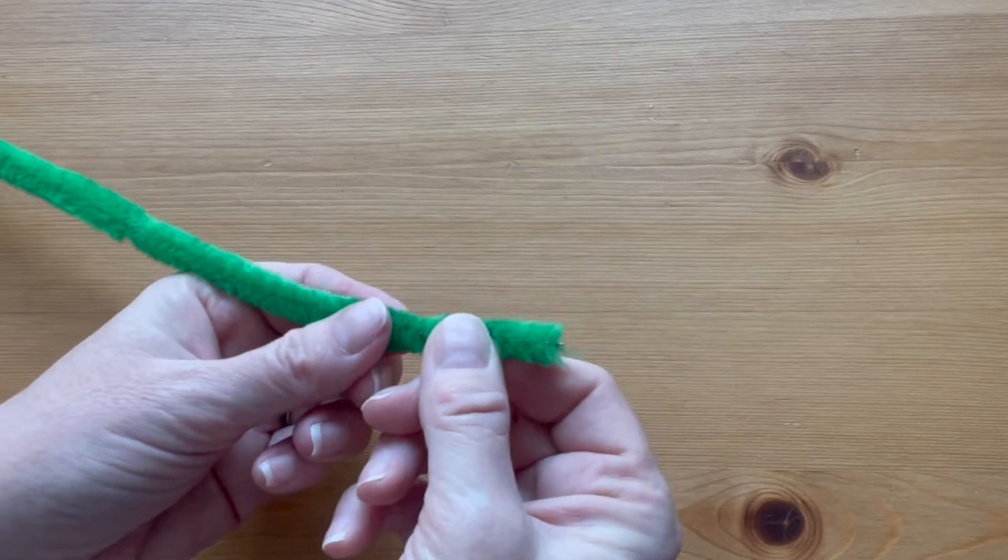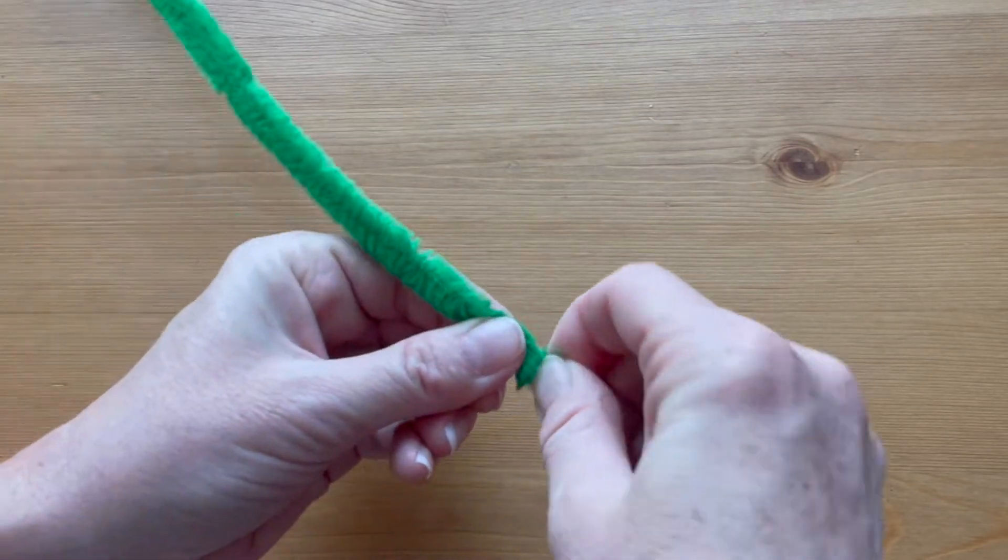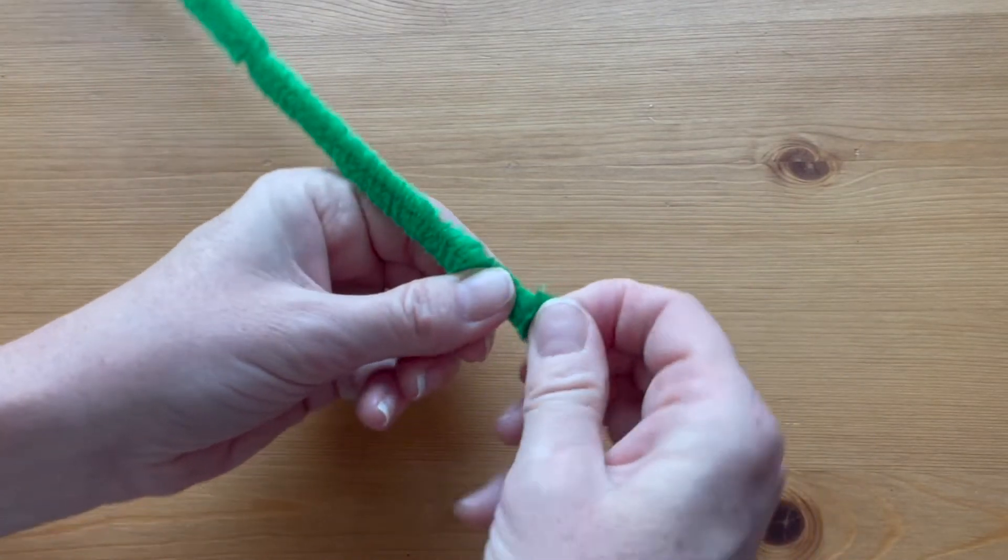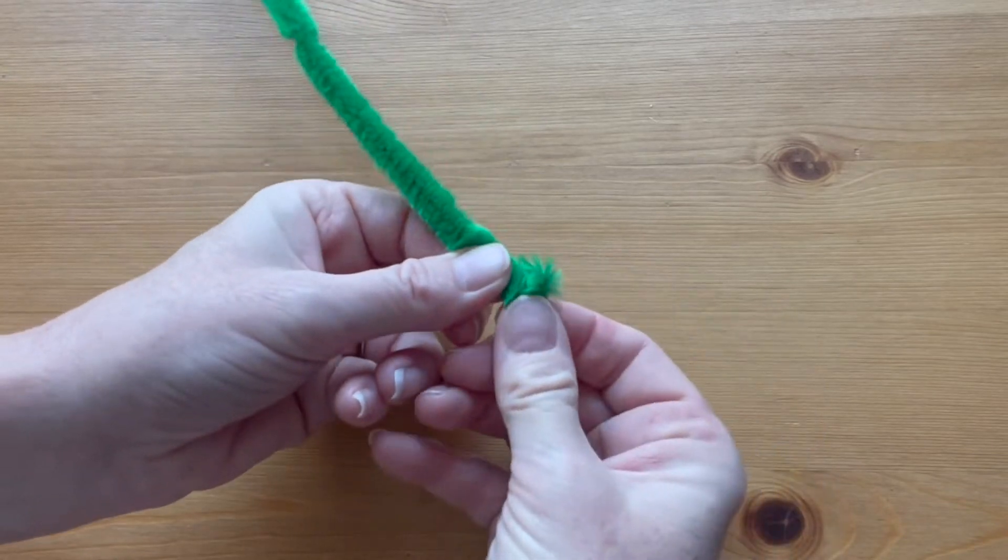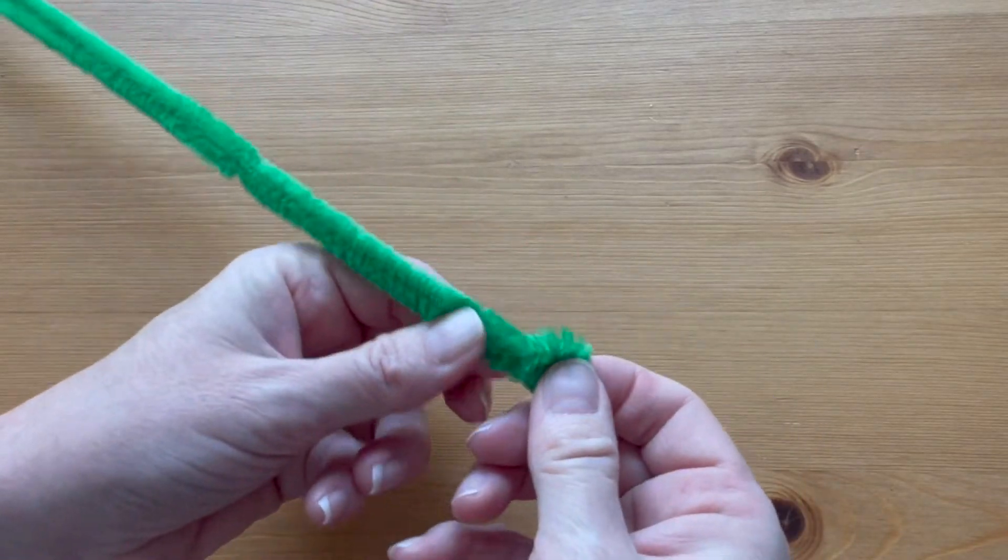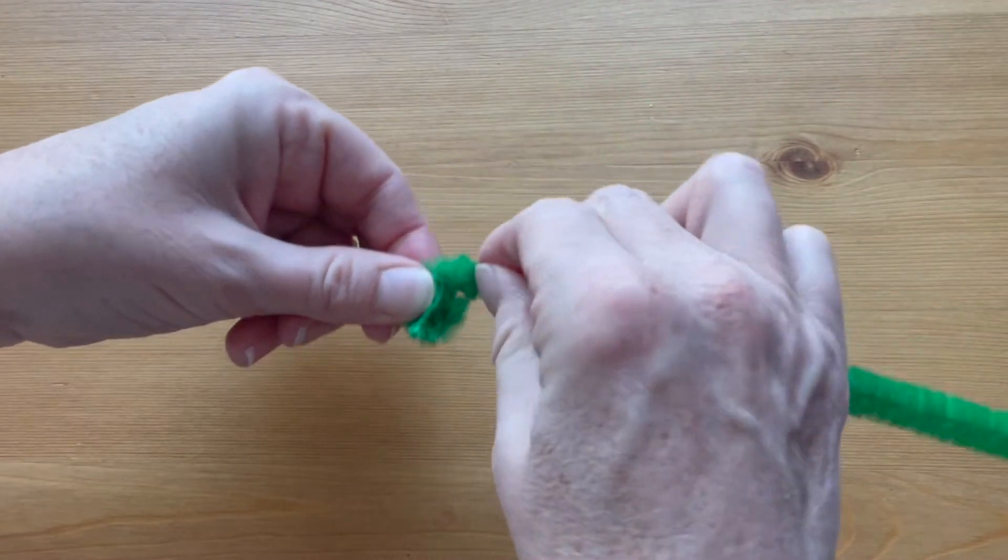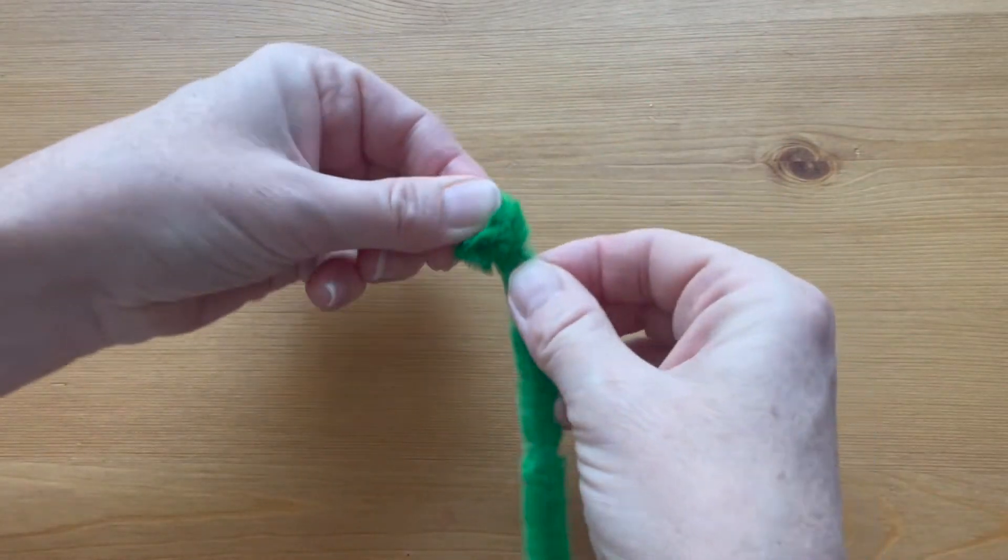To make the turtle shell take the green pipe cleaner and start coiling it tightly from one end. You want the coils to be close together and even slightly underneath the coil above it so you're making a slight cone shape.